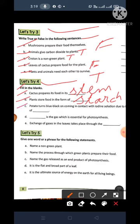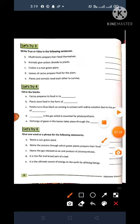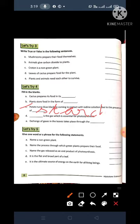Now come to the C. Potatoes Turns blue black on coming in contact with iodine solution due to the presence of starch. In the C what you will write here? St-A-R-C-H starch. Starch. In C you have to write starch.